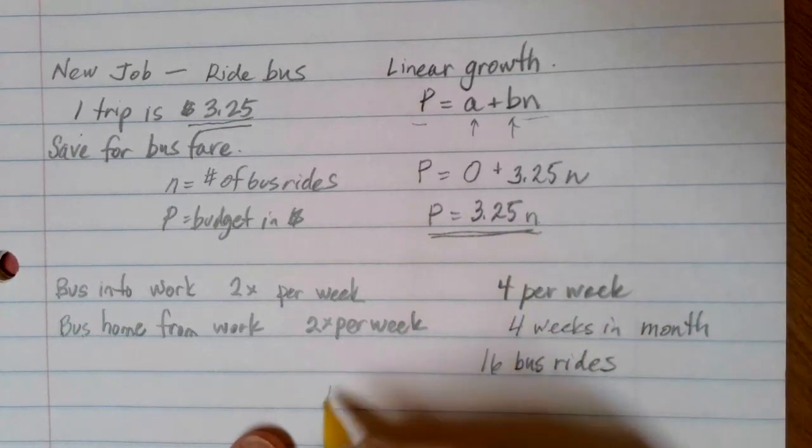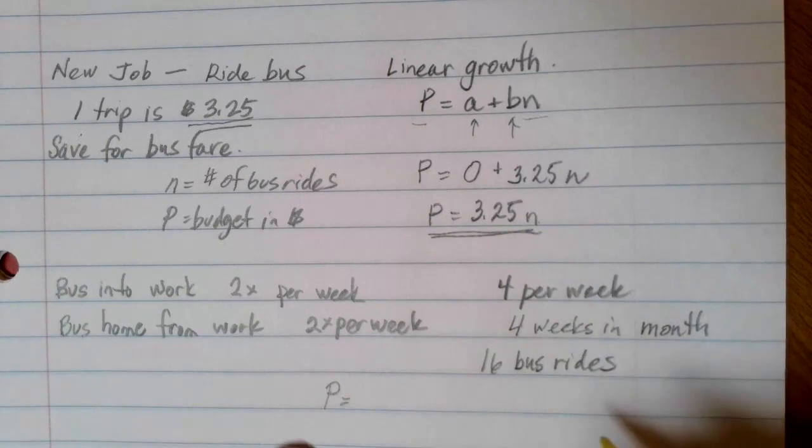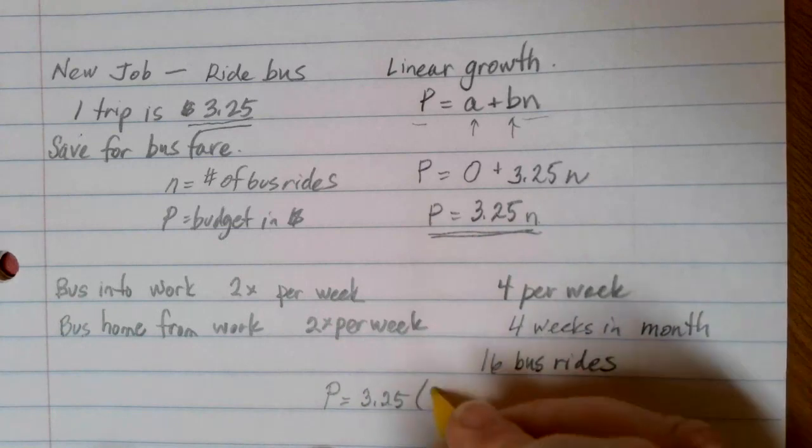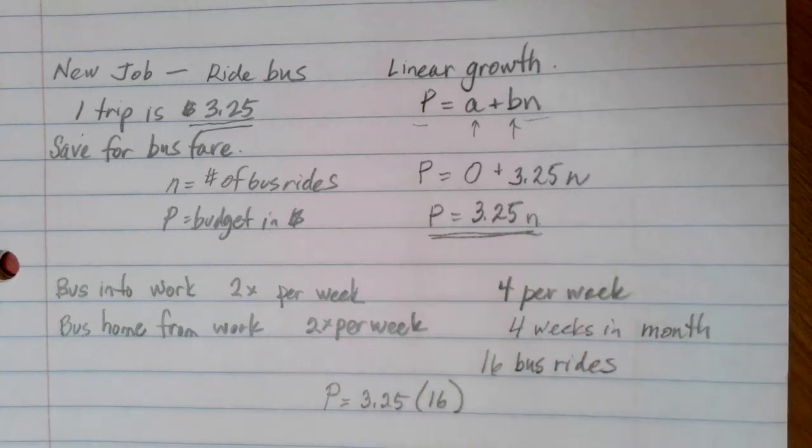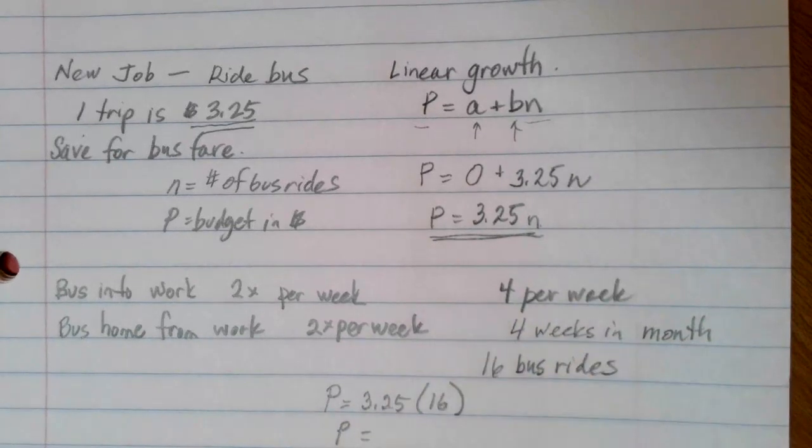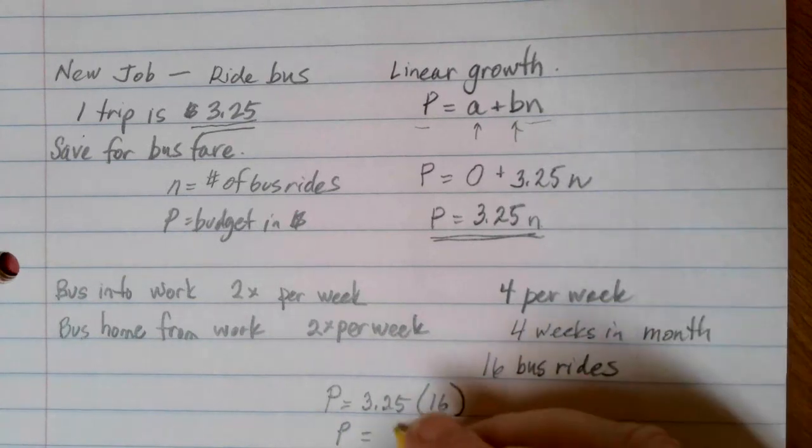So I can use my linear growth formula to figure out how much this is going to be, how much I should save. So P, my budget, is going to be equal to $3.25 per trip. And I'm going to need to do 16 trips. So P is going to be equal to $3.25 times 16. I'll pull out my calculator to do that. And I get $52.